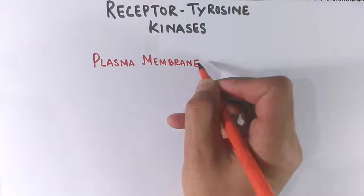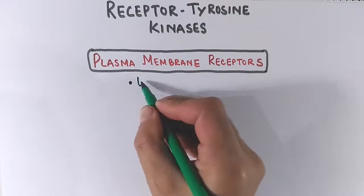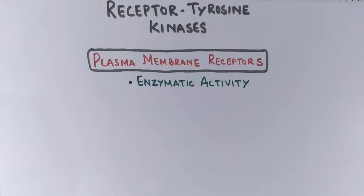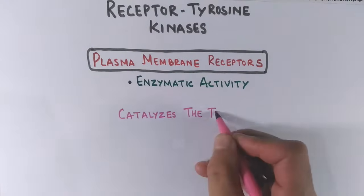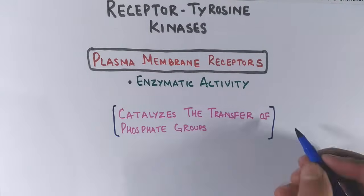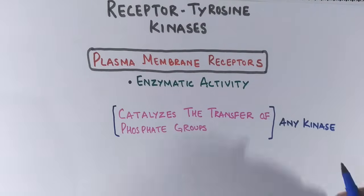These receptors are a kind of plasma membrane receptor and have enzymatic activity. The intracellular catalytic domains have kinase activity, and the enzyme that catalyzes the transfer of phosphate groups is the property of any kinase enzyme.